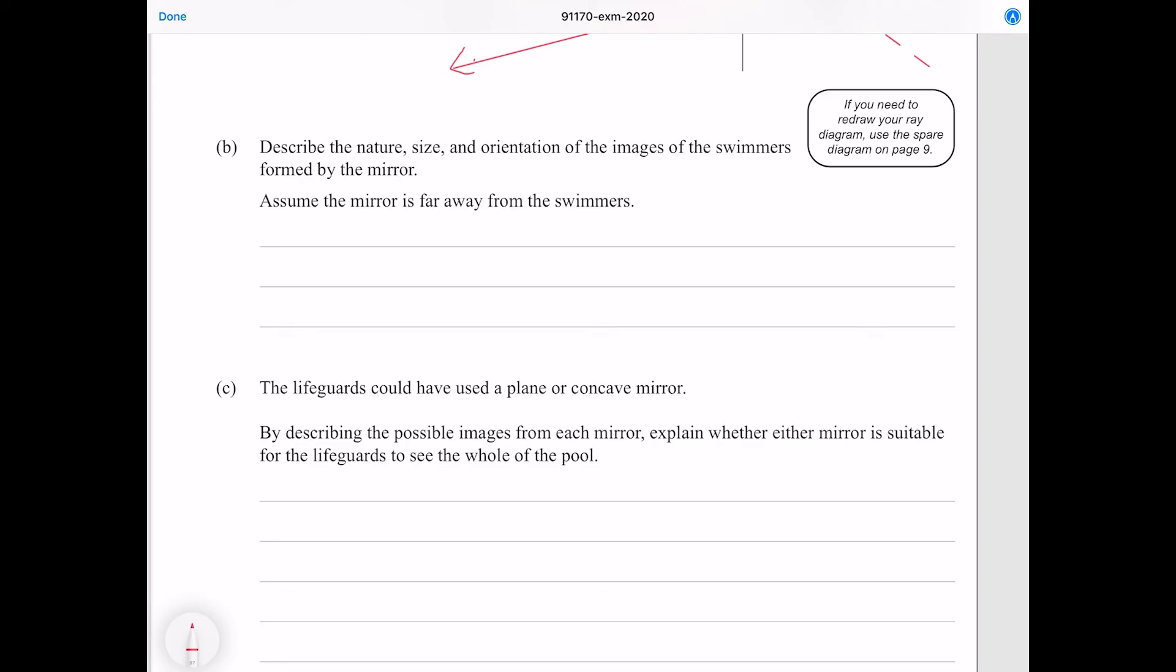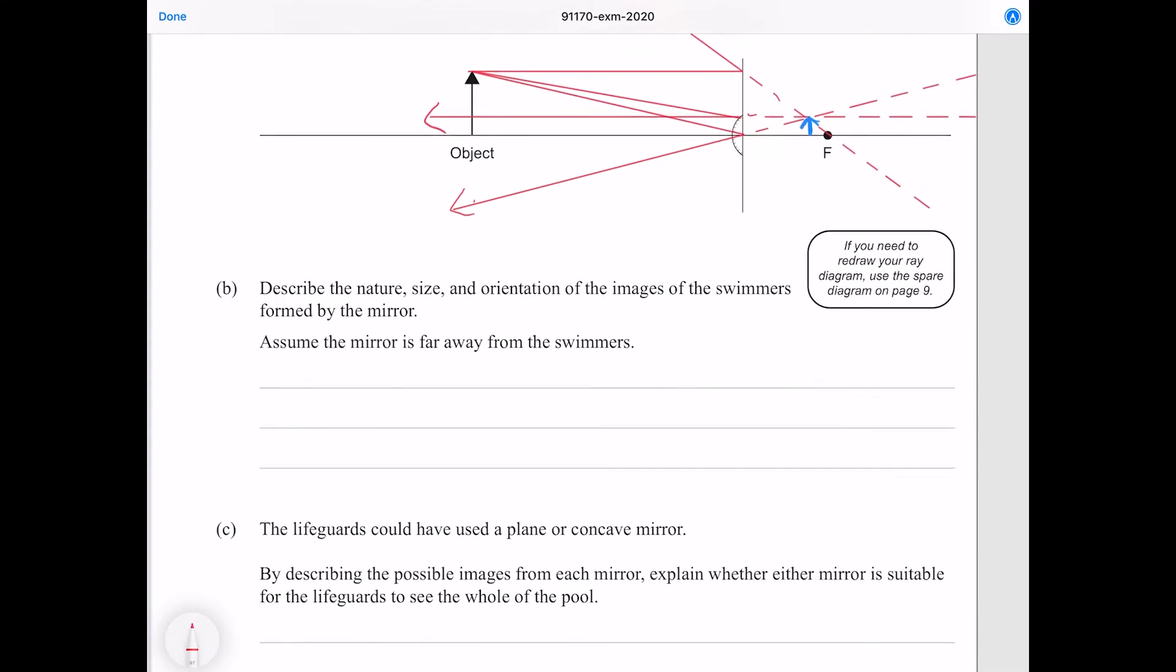Question B: Describe the nature, size and orientation of the images of the swimmers formed by the mirror. Assume the mirror is far away from the swimmers. As we can see, our image is upright, it is smaller so it's diminished, and because we had to back trace our rays, the rays are diverging in real space, we need to imagine that they converge, so we have a virtual image.